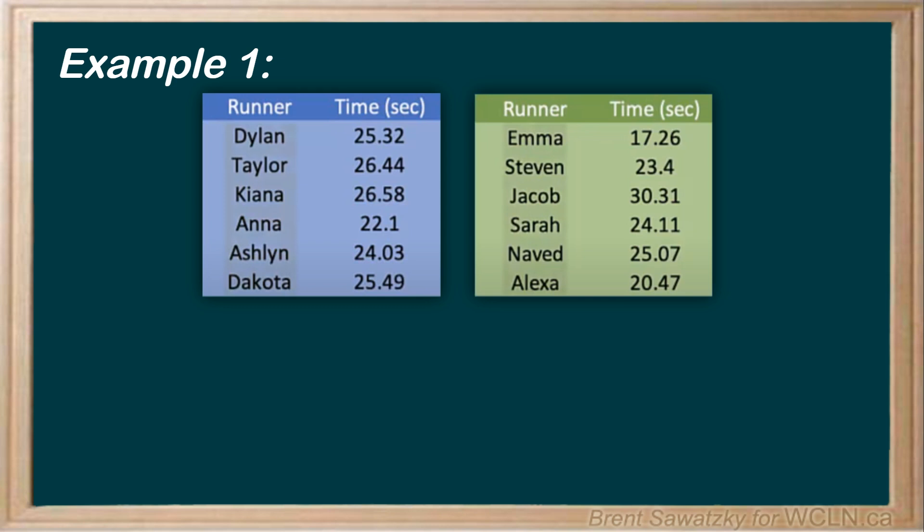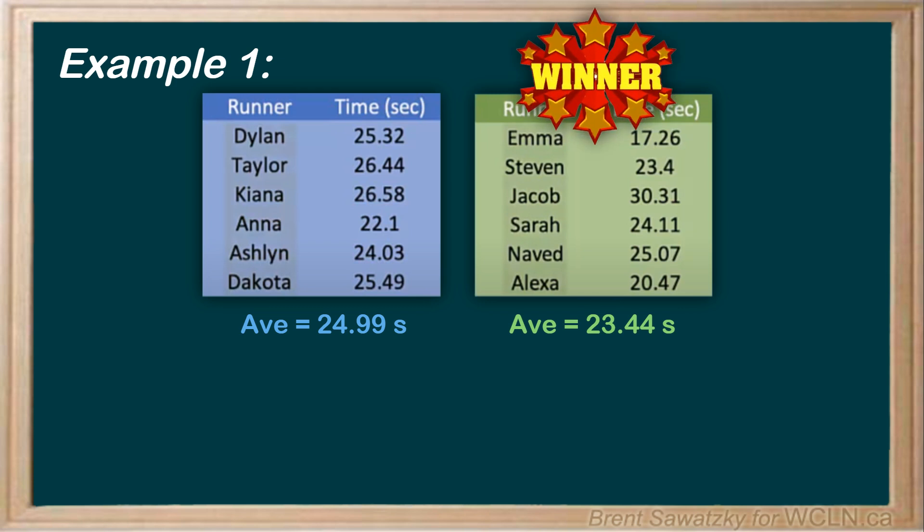If we start by determining the mean, or the average, that is, add all the times and divide by six for each team, we would see that the blue team has a mean of 24.99 seconds while the green team has a mean of 23.44 seconds. So it looks like the green team ran the better race, right? Well, maybe.